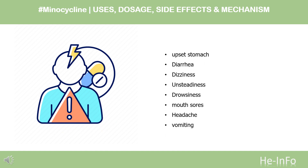Minocycline may cause upset stomach, diarrhea, dizziness, unsteadiness, drowsiness, mouth sores, headache, and vomiting. It increases sensitivity to sunlight and may affect the quality of sleep and rarely causes sleep disorders.